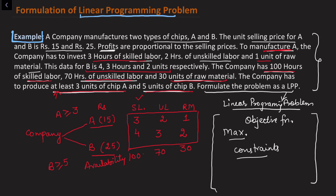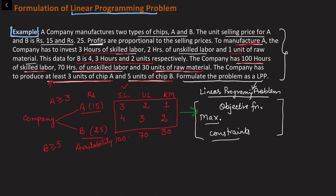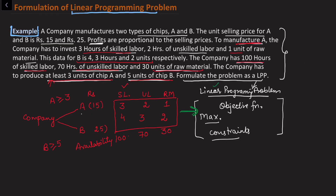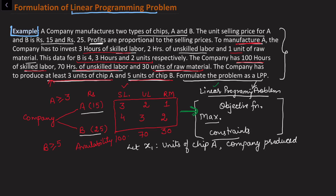Now I need to write this problem into a mathematical formulation. The first thing is to assign decision variables. Let x1 be the units of chip A that the company produces — that is the number or count of chip A produced. And x2 is the units of chip B that the company produces — the number of chip B.